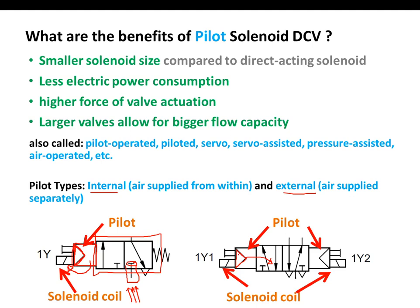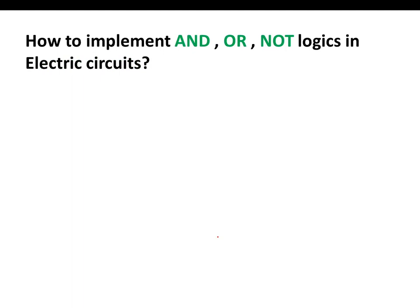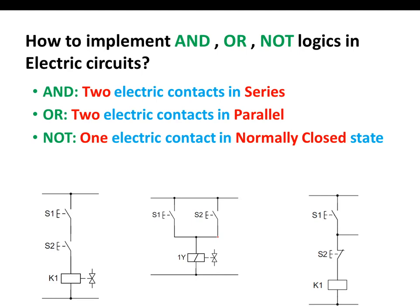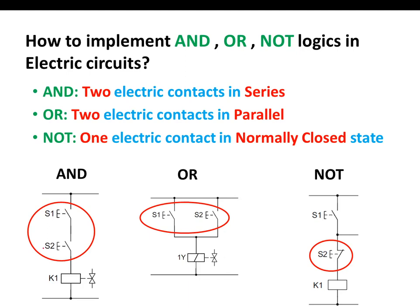How to implement AND, OR, and NOT logics in electro-pneumatics: we are still using these logics, however the way to implement them is different. For AND logic, we combine two switches in series. For OR logic, two switches in parallel. And for NOT logic, it is represented by a normally closed switch.